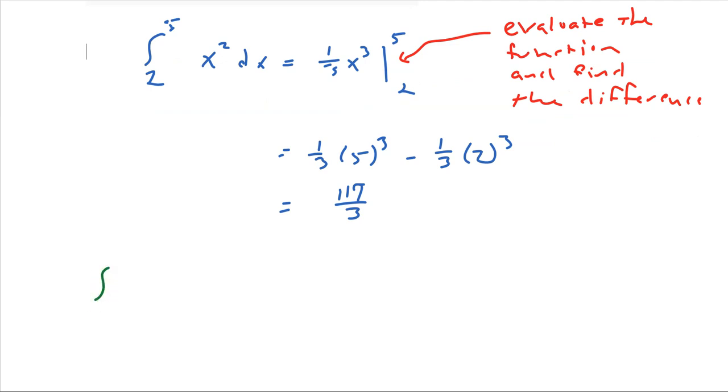Say we'll do some trig functions. We'll have an integral from 0 to pi of cosine of x dx. So what's the antiderivative for cosine? That would just be sine of x.